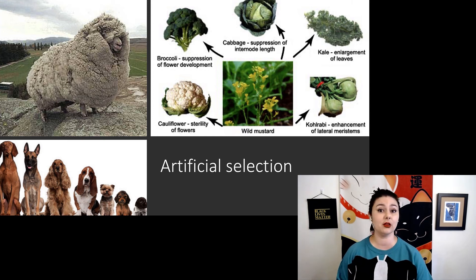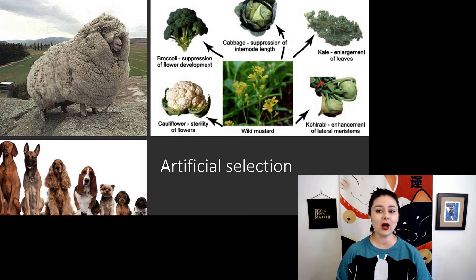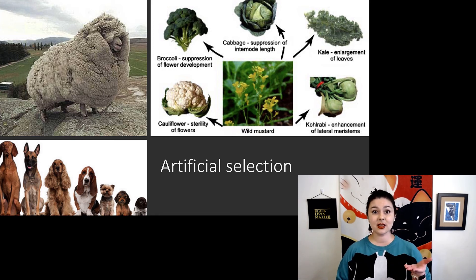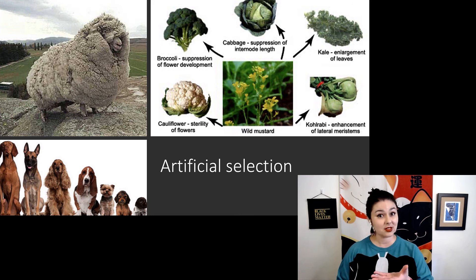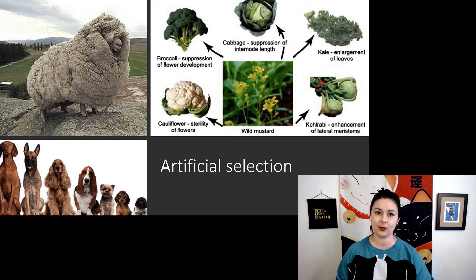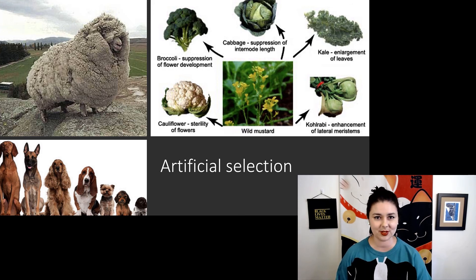With kale, we have enlarged the leaves. And we get kohlrabi by enhancing the lateral meristems. So we can take the same ancestor, and through principles similar to common descent — just speeding that up — we can create a vast number of different forms.